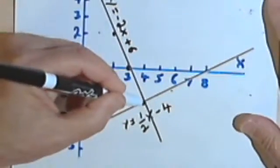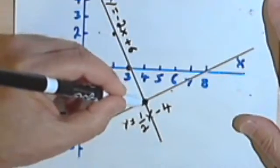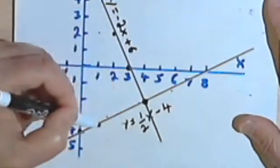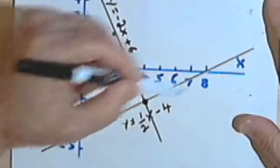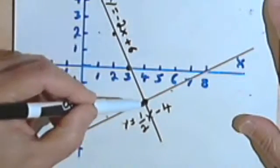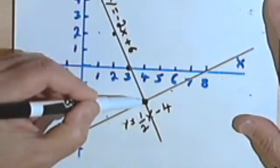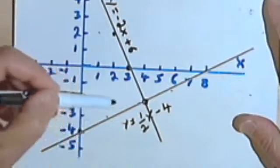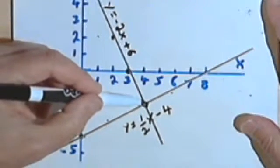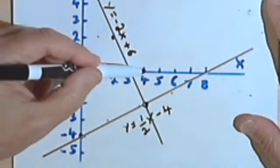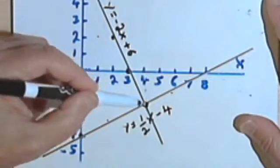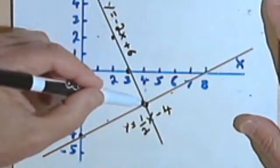And the point where they cross, right here, is the point where from all of these solutions and from all of these solutions, we have a pair of solutions that are exactly the same. And this point looks like it should be at 4, coming down from the 4, and negative 2.